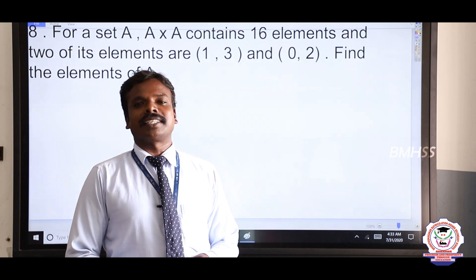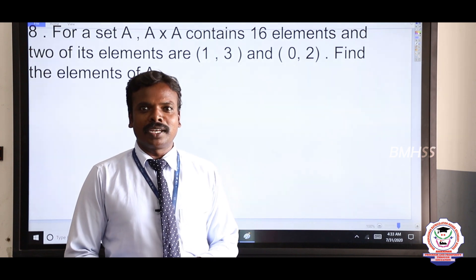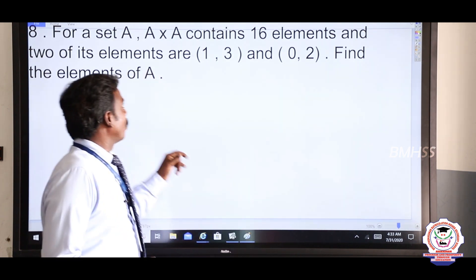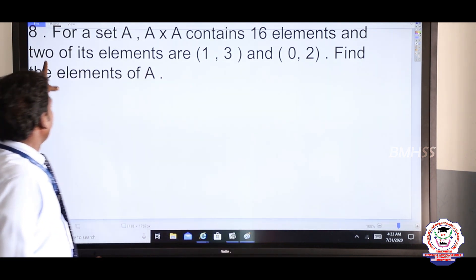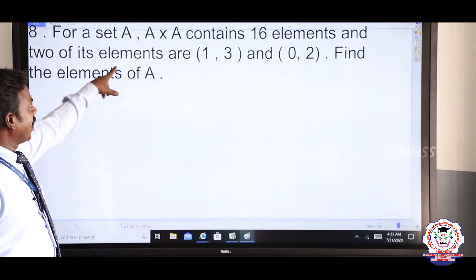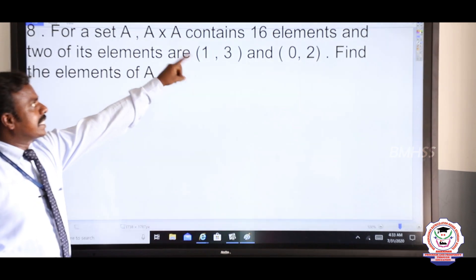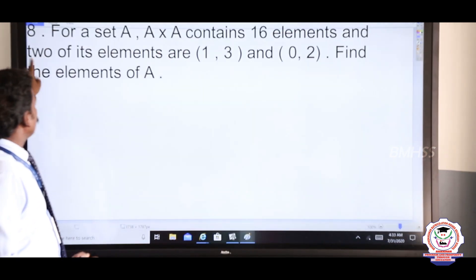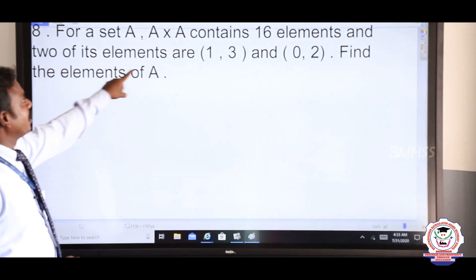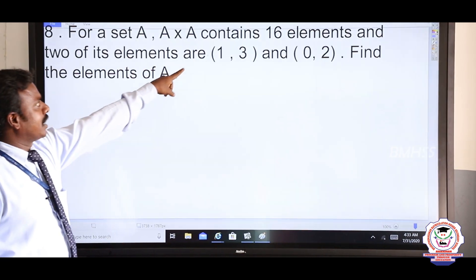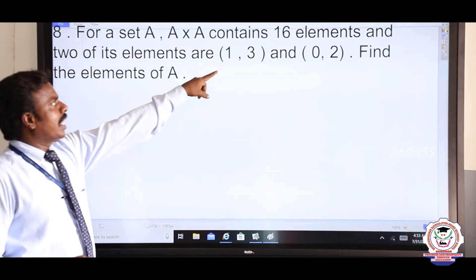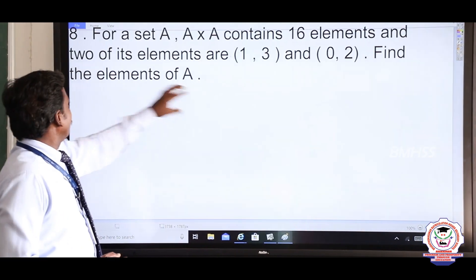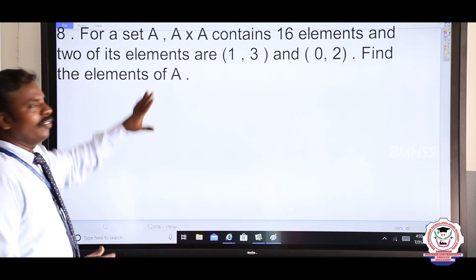In this chapter, exercise number 1.1, question number 8. For a set A, A cross A contains 16 elements and 2 of its elements are given — that is (1, 3) and (0, 2). Find the elements of A.